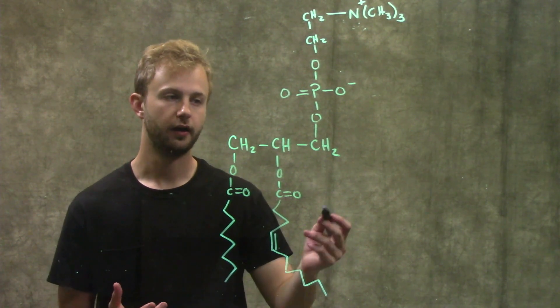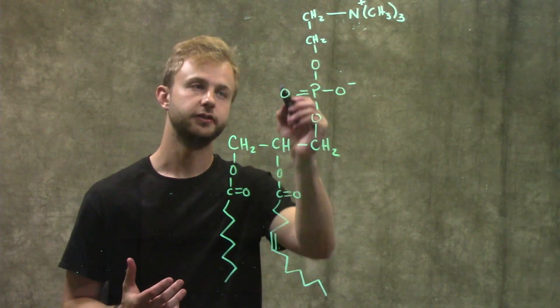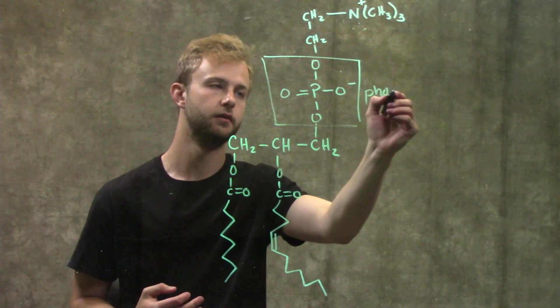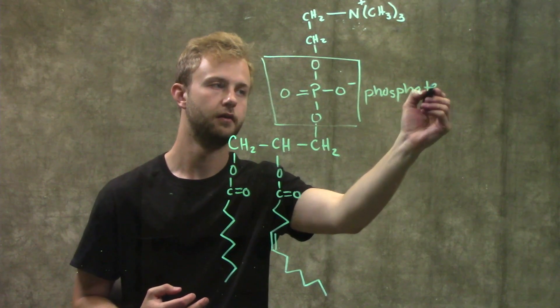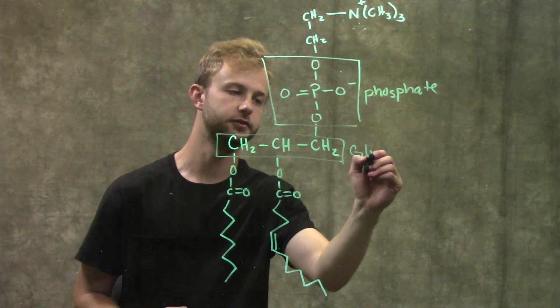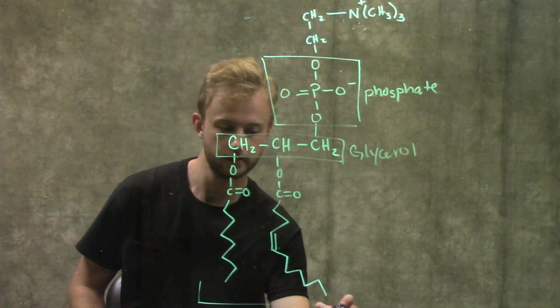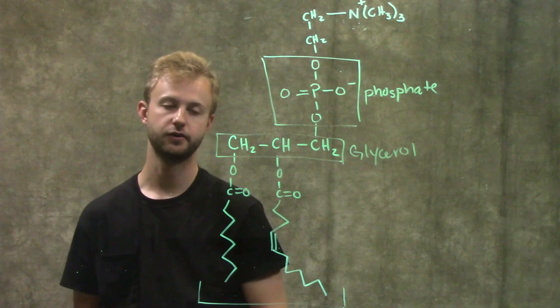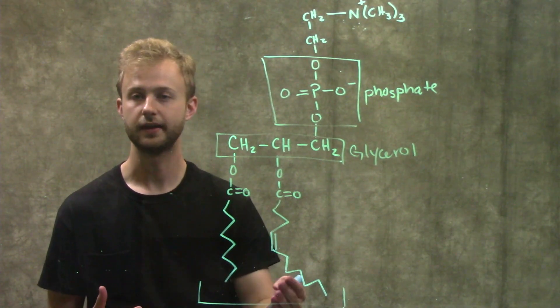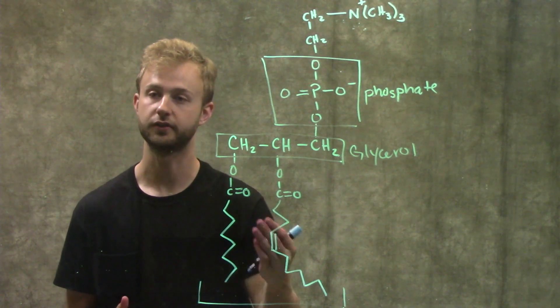So I've drawn the structure of a phospholipid over here and some parts of the structure might look familiar to you guys. So right here we have our phosphate group and then this group right here is actually a glycerol and then these two fatty acids down here are just fatty acids. They could be anything so that's one point of diversity in phospholipids is the fatty acids that are attached to this glycerol molecule.